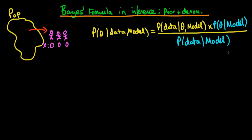In this video, we're going to continue on looking at the same example, and we're going to use this example to introduce how we can formulate what is known as the prior part of the Bayesian formula, and also what I'm going to call the denominator, which is just the probability of the data given the model choice.